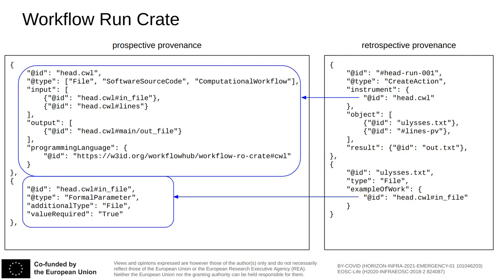Workflow-Run-Crate is similar to Process-Run-Crate. In this case, however, the running application is represented as a computational workflow as specified in Workflow-RO-Crate, a profile used to represent workflows. In particular, the workflow's input and output slots are represented as FormalParameter instances, based on the Bioschemas computational workflow profile. Bioschemas is an extension of schema.org for the life sciences. This diagram shows the interlinking between prospective and retrospective provenance. The action points to the workflow via the instrument property, and the action's object, which represents the actual value taken by the parameter, points to the formal parameter via exampleOfWork. FormalParameter instances provide useful information, such as whether a parameter is optional or has a default value.